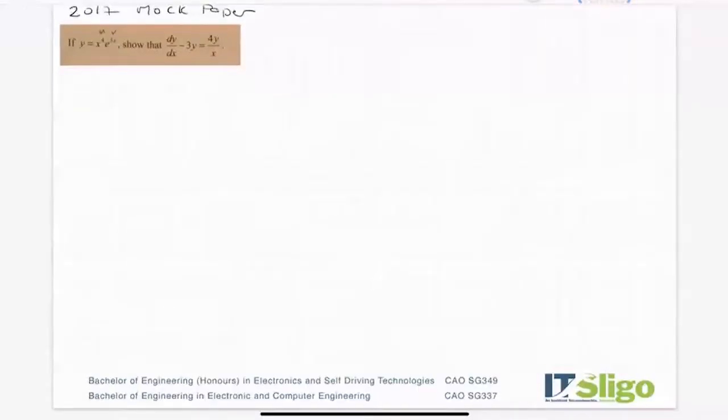Right, so this one comes off a 2017 mock paper. If y is equal to x to the power of 4 e to the power of 3x, show that dy/dx minus 3y is equal to 4y over x.